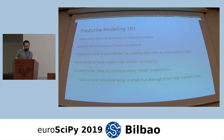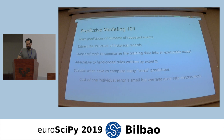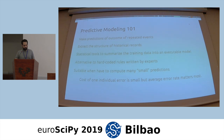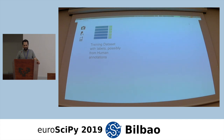You can think about machine learning as an alternative to hard-coded rules written by experts who know exactly how the data is generated. Here, we do not necessarily know the process that generates the data, so we just try to find statistical regularities to make a predictive model. It's suitable to compute many small predictions in cases where individual errors are not a big problem, as long as on average you're making good predictions. Do not use machine learning for critical decision-making.